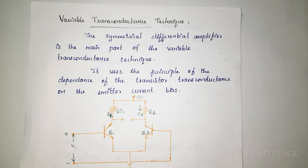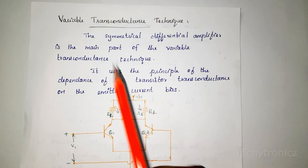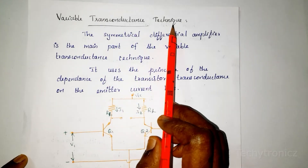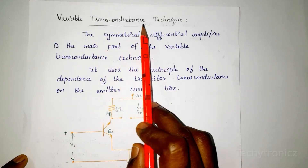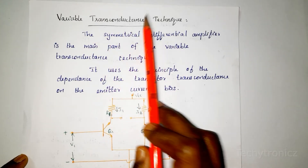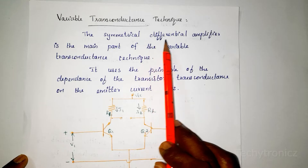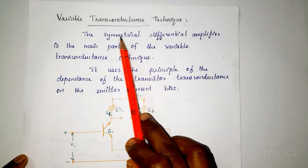That is, the output voltage is directly proportional to the product of two input voltages. In the Variable Transconductance technique, the main part is the Differential Amplifier.